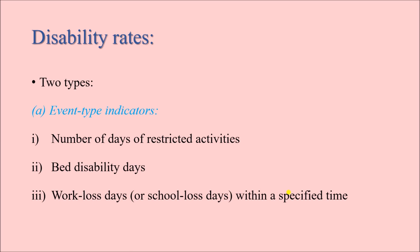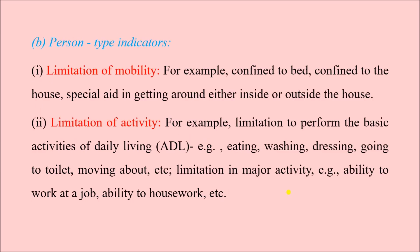Event type indicators include: first, the number of days of restricted activities — for how many days the person cannot perform all activities and has some kind of restriction. Second, bed disability days — for how many days the person has to remain confined to bed because of the disability. Third, work loss days or school loss days — in a given time period, for how many days a person cannot go to work, or a child cannot go to school or college, because of the disability.